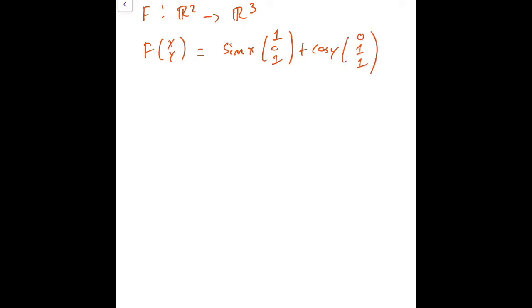Now, this doesn't seem linear because sine of x is not linear and cosine y is not linear. Sine and cosine are not linear, so this probably shouldn't be linear. So that's really the intuition here that's going to help us show that this is not linear.